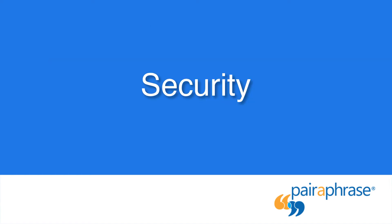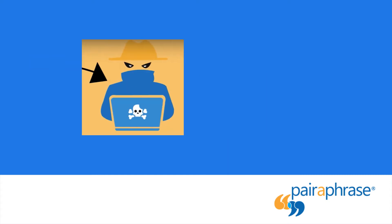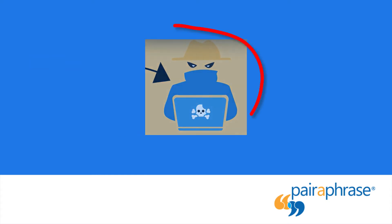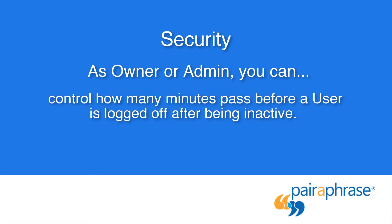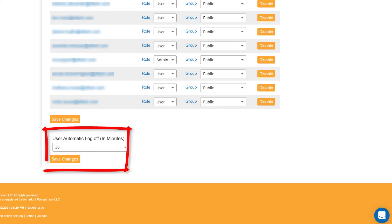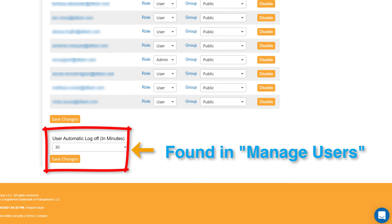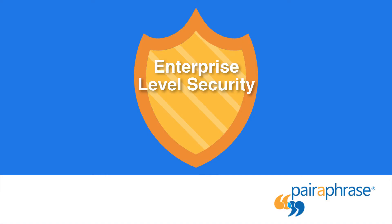Let's talk about security. As an admin, you have some important security features at your disposal to keep your organization and users safe from online predators. Owners and admins can control how many minutes pass before your users are automatically logged off after being inactive. The default user automatic log-off time is set for every 30 minutes of inactivity. User automatic log-off is one of Paraphrase's many enterprise-level security features.